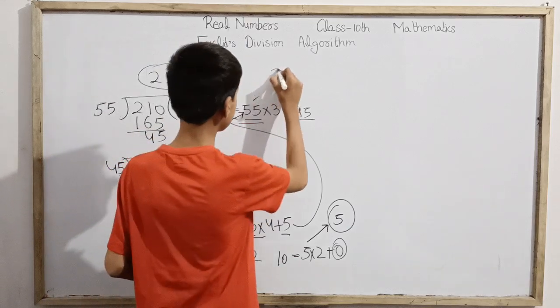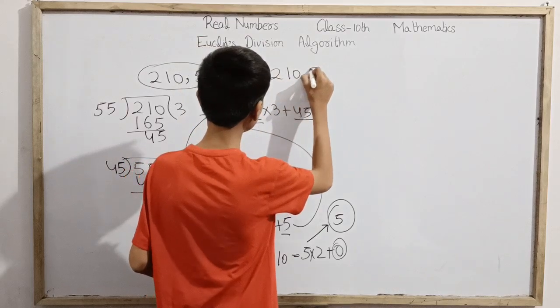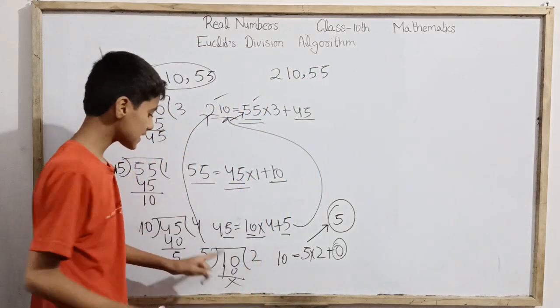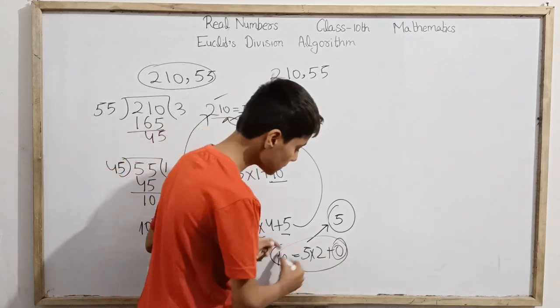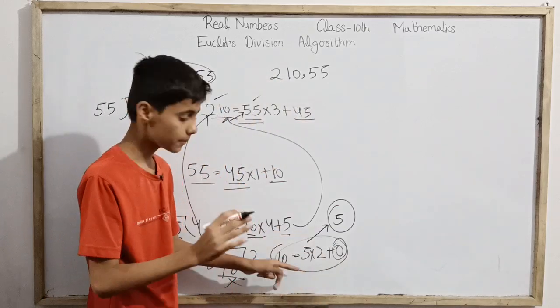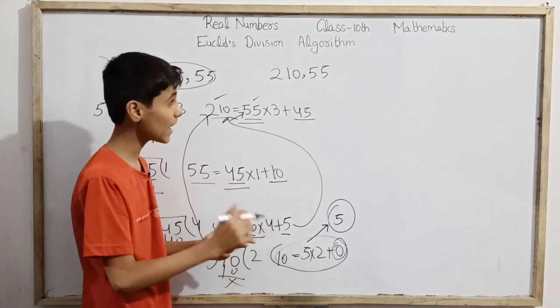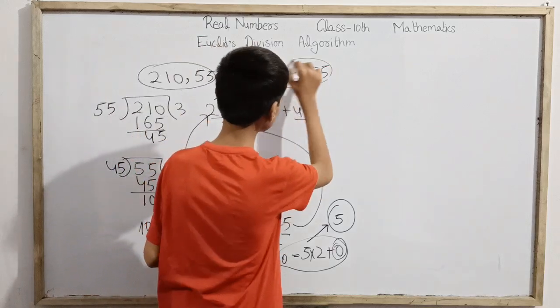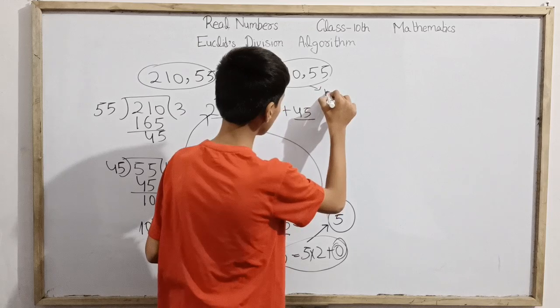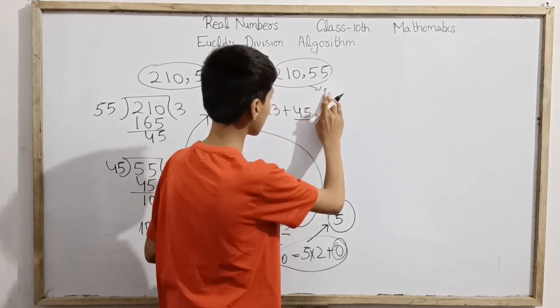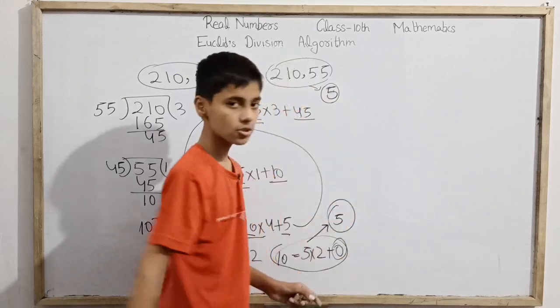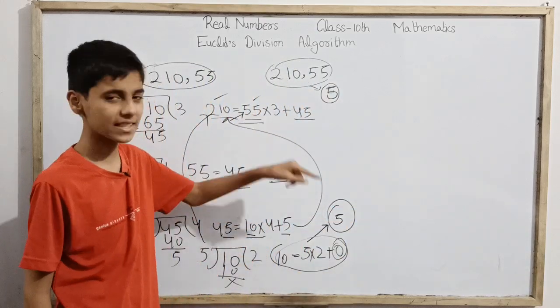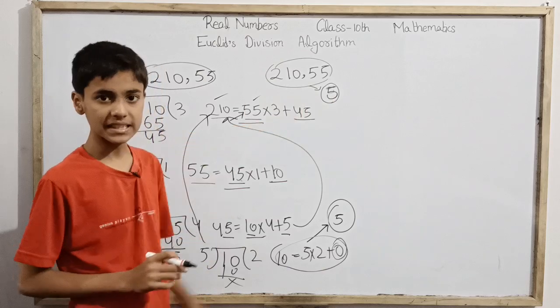When we finally get remainder 0, the common divisor becomes clear. Since 10 is exactly divided by 5, the highest common divisor is 5. This means for our initial numbers 210 and 55, when we continue this series until remainder becomes 0, the divisor at that step is the HCF or GCD of both numbers.